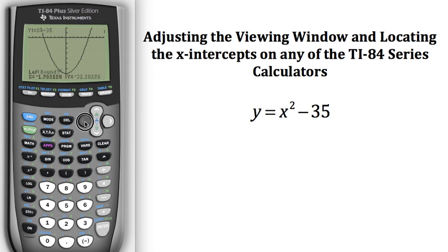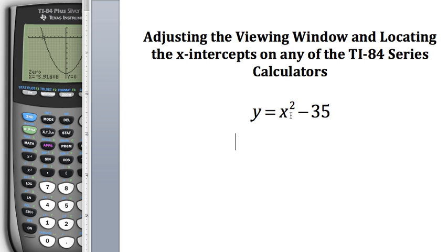I'm going to arrow over till I am on the left side of that x-intercept. It's hard to see, but you are to the left side of that. Now I'm going to hit enter, and it asks for the right bound. I'm going to arrow to the right of it and hit enter. Now the calculator is asking for the guess, so I'm going to attempt to guess where that x-intercept is and hit enter. It gives me a value of negative 5.91608 and a y value of zero. So from that first x-intercept, I can enter negative 5.92 if you're rounding to the nearest hundredths, and then zero.